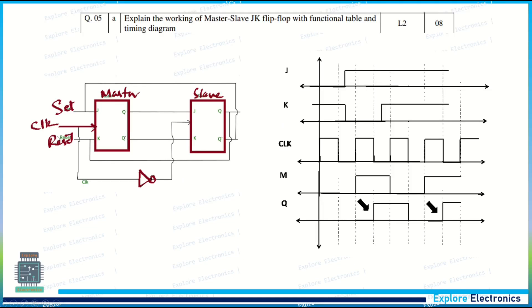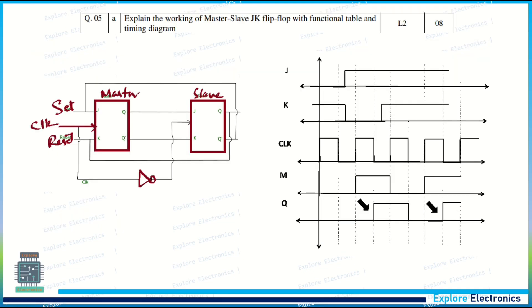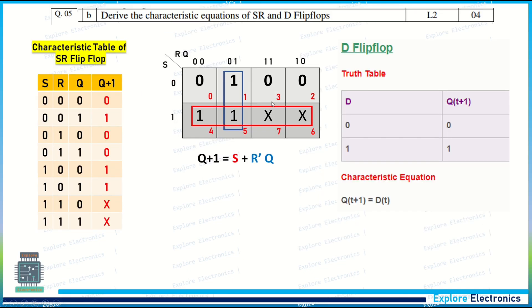The JK inputs are shown here — marked as Set and Reset, treat them as J and K. When J goes high, the master output goes high, but the slave does not go high at the same time; after half a cycle of delay, the slave follows the master. You also need to write the truth table for the JK flip-flop — I forgot to write it here, but the functional table carries marks.